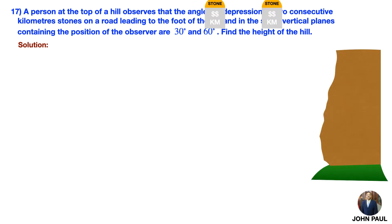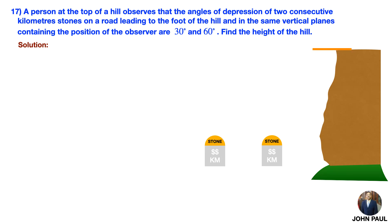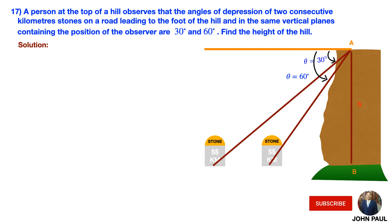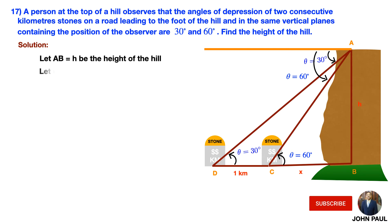Let us consider the hill and the kilometer stones. A person is standing on the top of the hill and observes the kilometer stones at angles of 30 degrees and 60 degrees. Let AB be the height of the hill, and C and D are the kilometer stones. The distance between consecutive kilometer stones is 1 kilometer. Let BC equal to X.